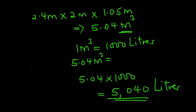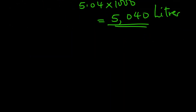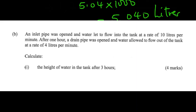Let's go to part B of this question. We are told that an inlet pipe was opened and water allowed to flow into the tank at the rate of 10 liters per minute. Then after 1 hour, a drain pipe was opened and water allowed to flow out of the tank at the rate of 4 liters per minute.